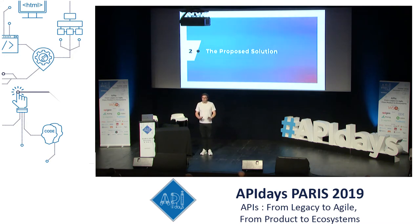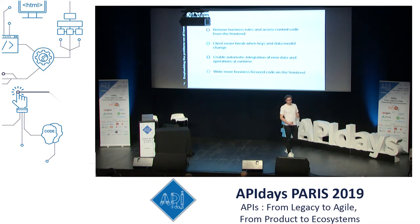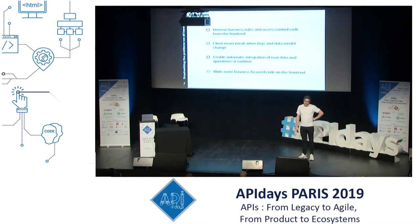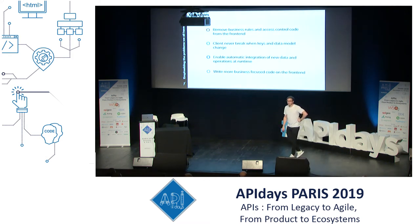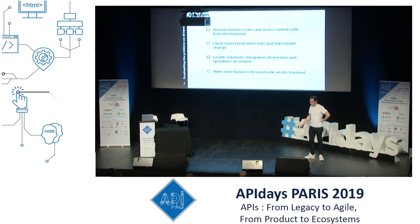Let me list the objectives I had. I'd like to remove business rules and access control code from the front end, because they are always verified on the back end. I'd like the client to never break when I change keys, data models, and URLs. It would be very cool to enable the automatic integration of new data and operations at runtime on the front end — so if I add an operation on the API it can be available on the front end without changing the code. And I'd like to write more business-focused code than very technical code.